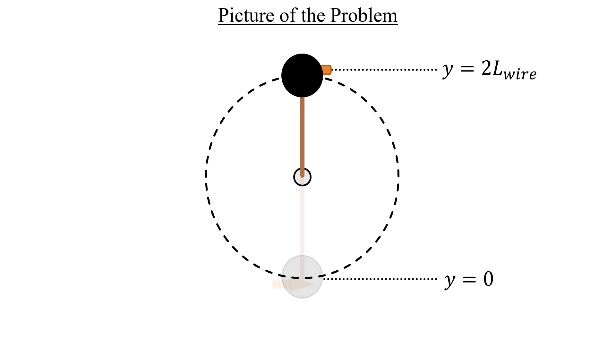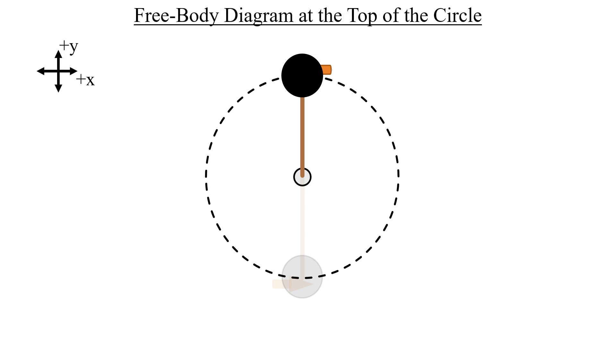We want the velocity at the top of the circle first, so let's draw a free body diagram at that position. We have the weight of both objects pointing downward as well as the force of tension from the wire. And since we have circular motion here, a centripetal acceleration vector off to the side is required as well.